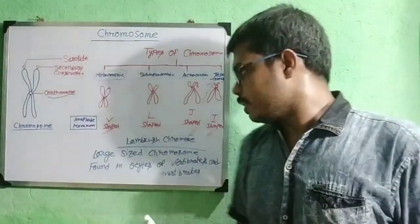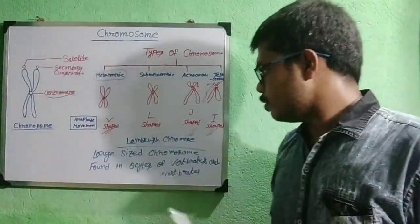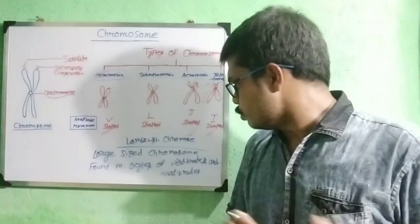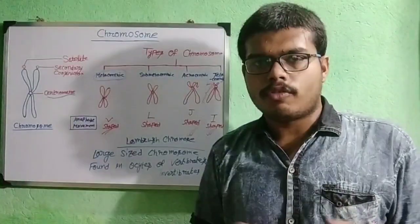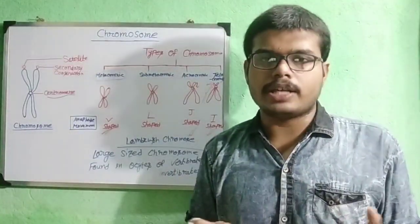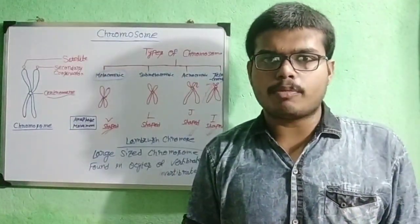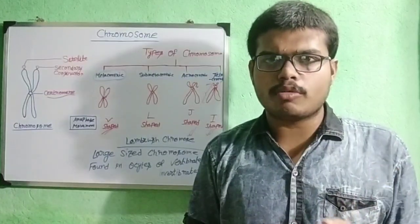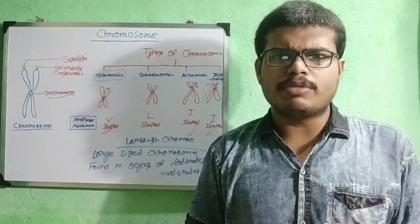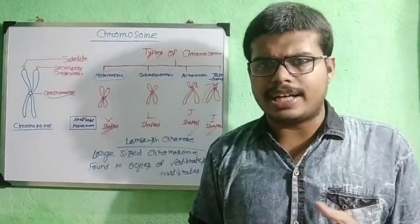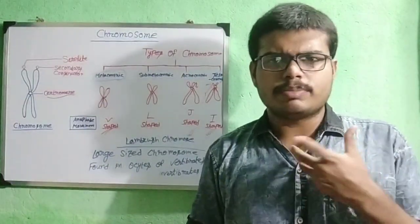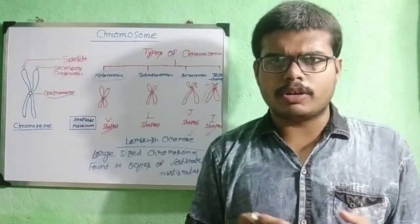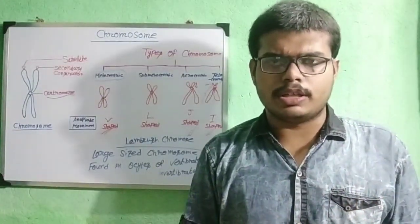The lampbrush chromosome is a large-size chromosome found in the oocytes of vertebrates and invertebrates. Another type of chromosome is the polytene chromosome, which is usually found in some cells of salivary glands, but it is not required as it is not in your syllabus.